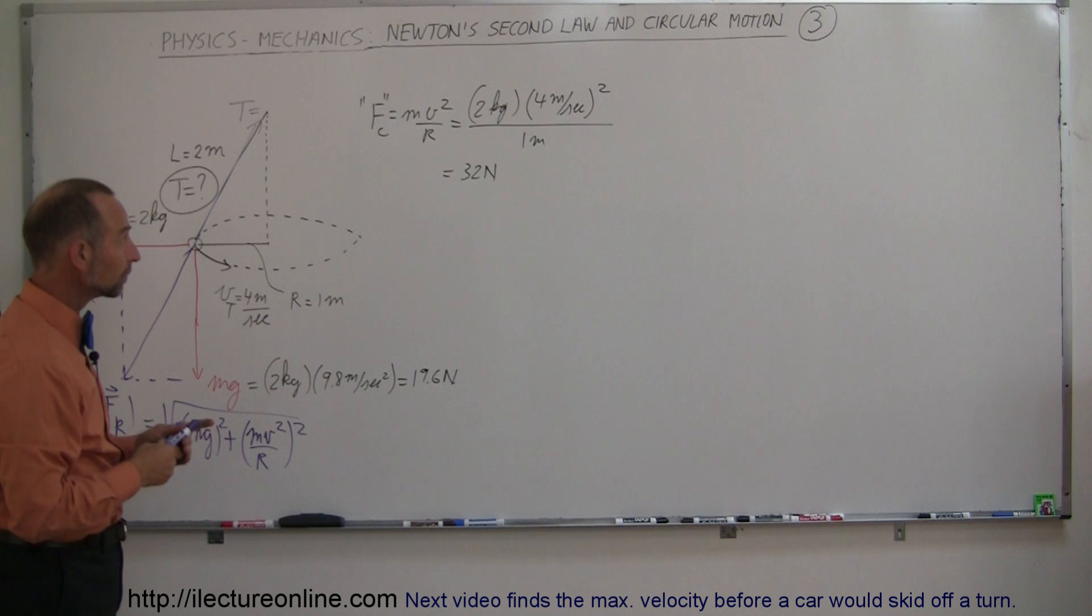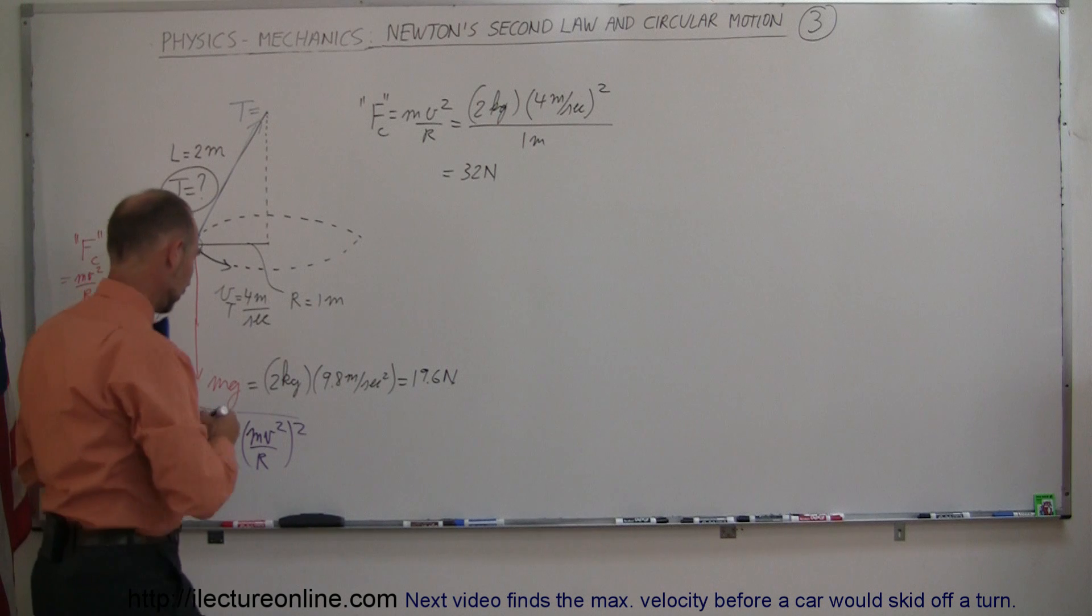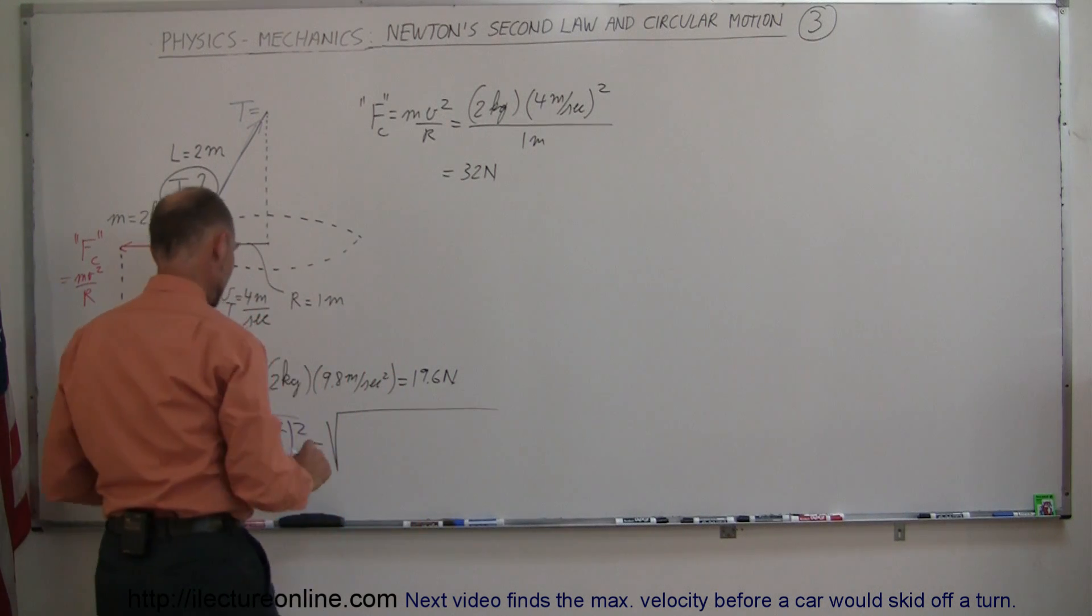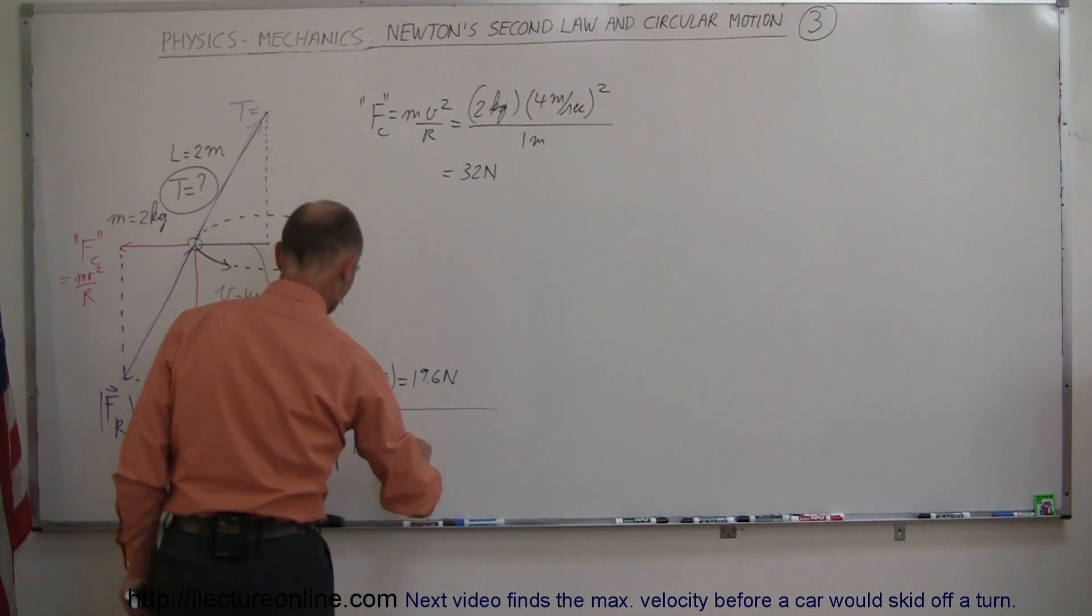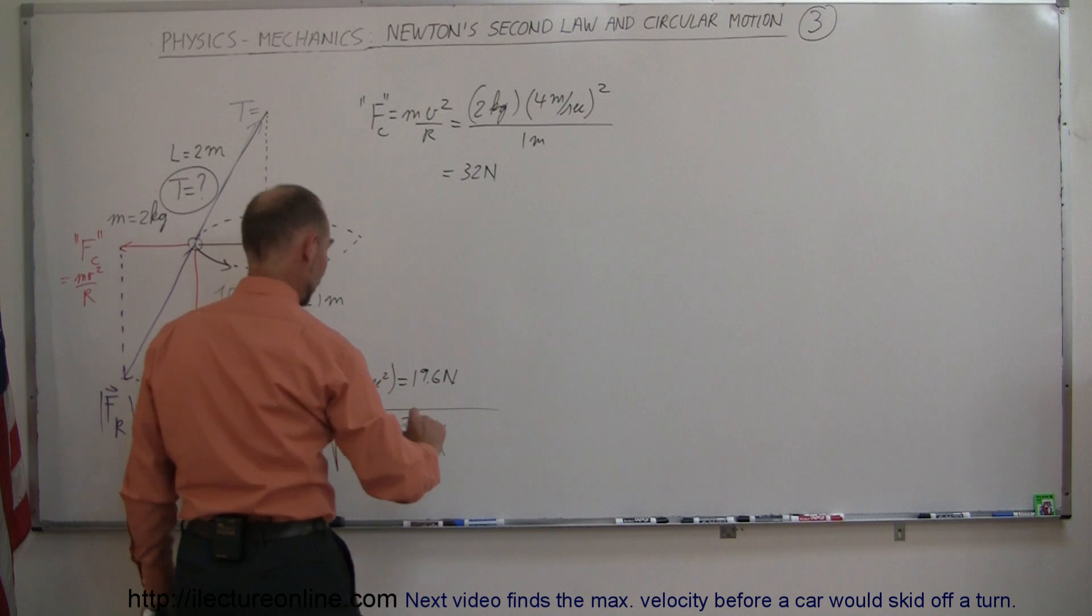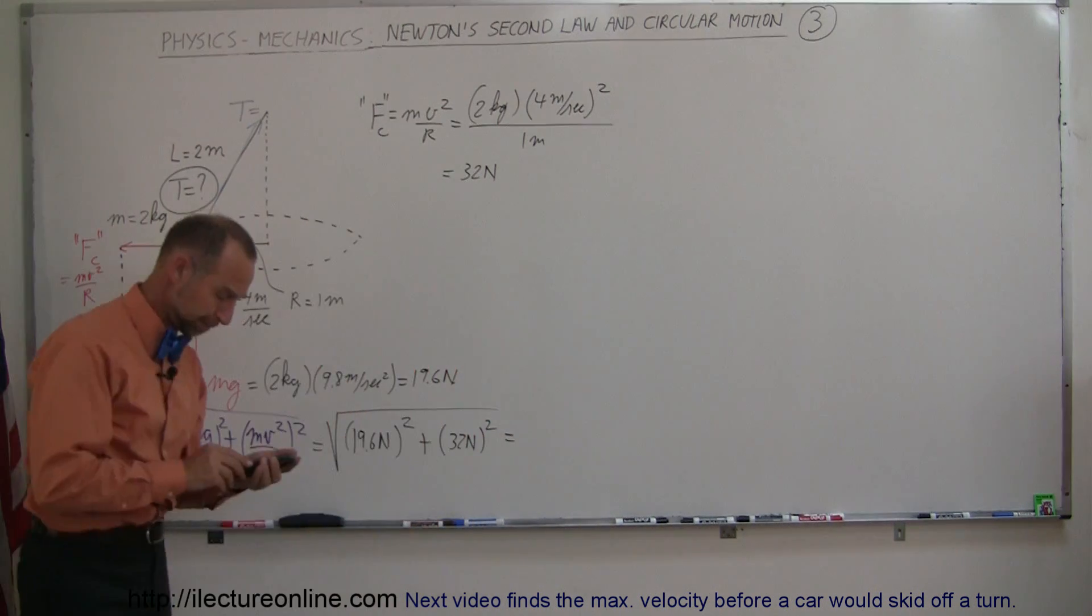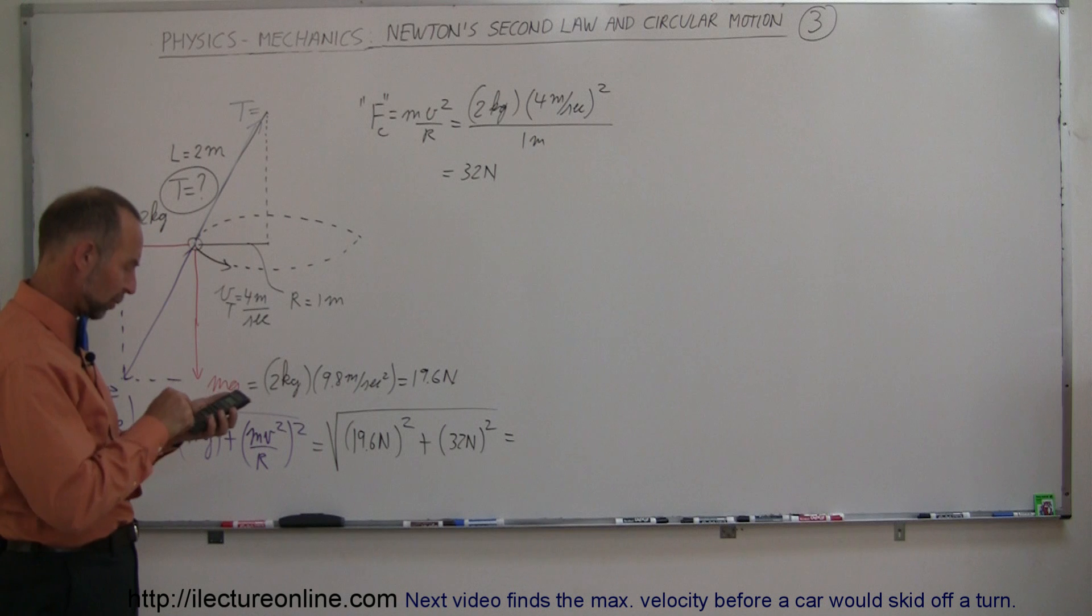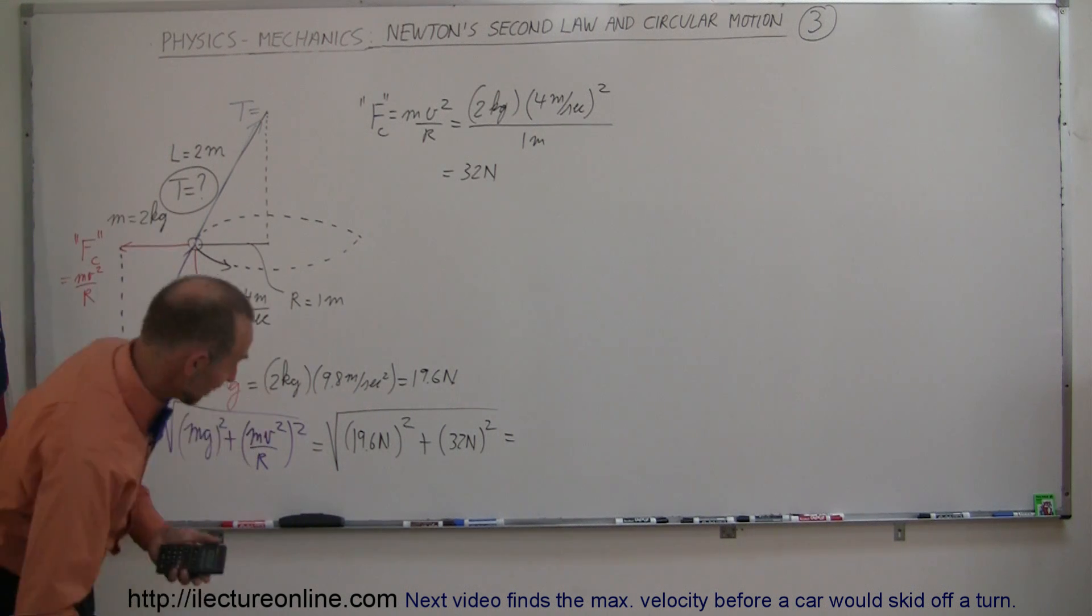Now we find the resultant force. This equals the square root of mg squared—19.6 newtons squared—plus mv squared over r squared—32 newtons squared. So 19.6 squared plus 32 squared, take the square root, and we get 37.5.